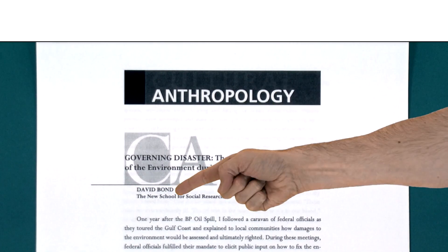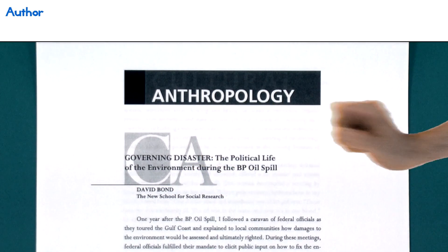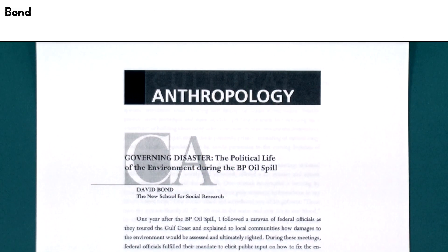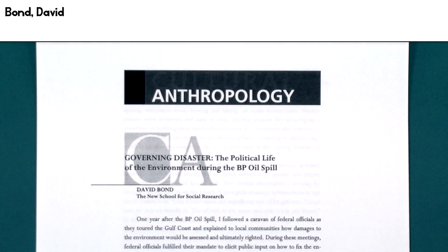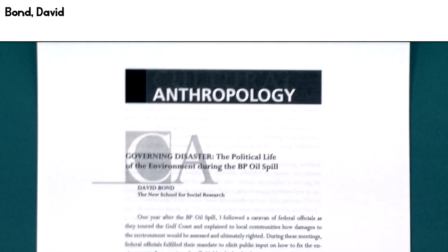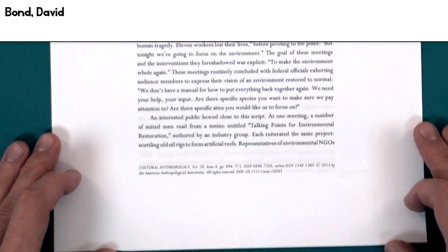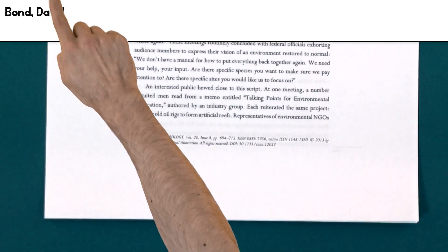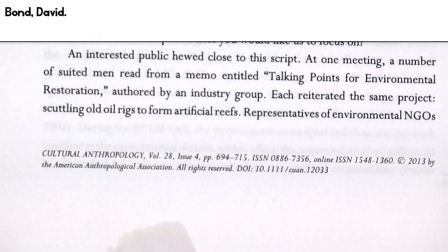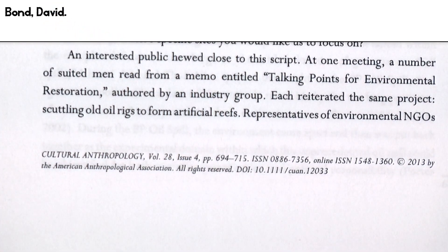We start with the author, which we indicate like so: Bond, David. Chicago requires authors' names to be flipped around to make it easier to put citations in alphabetical order. And then we close this bit with a period to indicate that this section of the citation is complete.